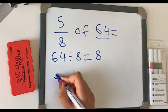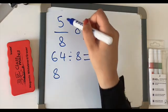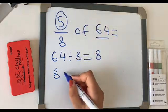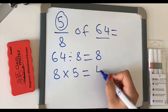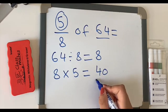64 divided by 8 is 8. We then do 8 times that by our numerator, which is 5. 8 times 5 equals 40. So the answer is 40.